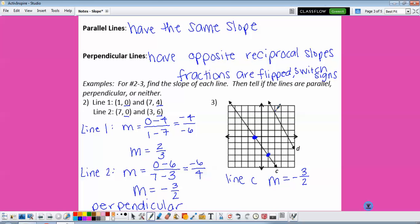On line D, we go up 2 and left 1. So that would be negative 2 over 1, or negative 2. These aren't flipped fractions, they're not the same, so these are neither parallel nor perpendicular.